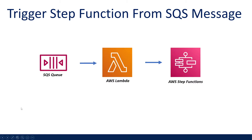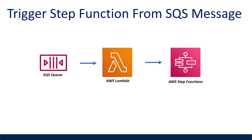What is going on everyone? This video is a step-by-step guide on how to trigger a step function when a message comes in our SQS queue using a Lambda function as a trigger. This integration pattern is used when you need to trigger a step function to orchestrate some workflow when a message enters a queue from the SQS service.